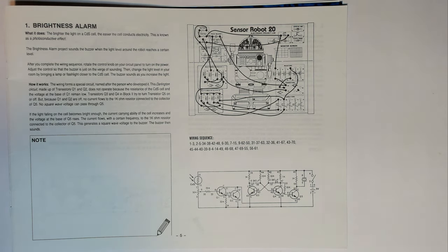After you complete the wiring sequence, rotate the control knob on your circuit panel to turn on the power. Adjust the control so that the buzzer is just on the verge of sounding. Then change the light level in your room by bringing a lamp or flashlight closer to the CDS cell. The buzzer sounds as you increase the light.